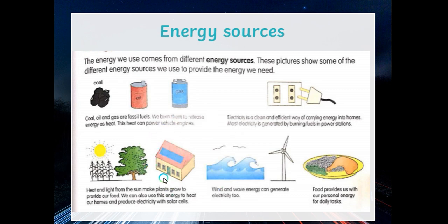Another source is heat and light from the sun. The sun makes plants grow by providing food for the plant. We can use this energy to heat our homes and produce electricity with solar cells. If you look at some places in Qatar, there are solar panels on top of the roof. Wind energy can generate electricity too, and the food we eat every day provides us with energy to carry out our daily tasks.